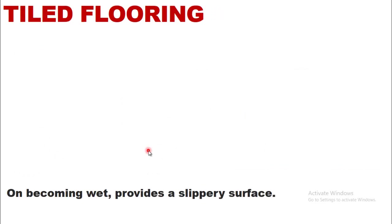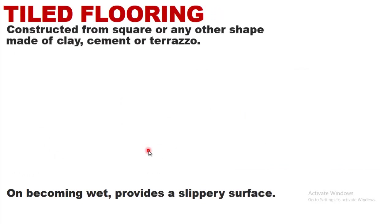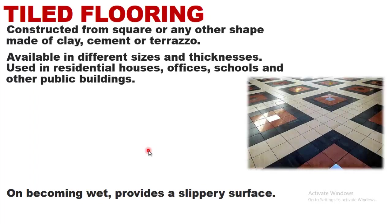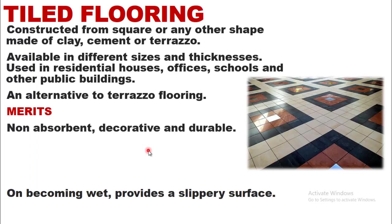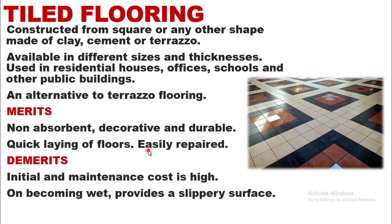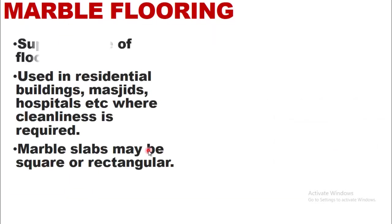Tile flooring is constructed from square or other shaped tiles made of clay, cement, or terrazzo, available in different sizes and thicknesses. It is used in residential houses, offices, schools, and other public buildings as an alternative to terrazzo flooring. Merits: non-absorbent, decorative, durable, and allows quick laying and easy repair. Demerits: initial cost is high and provides a slippery surface when wet.